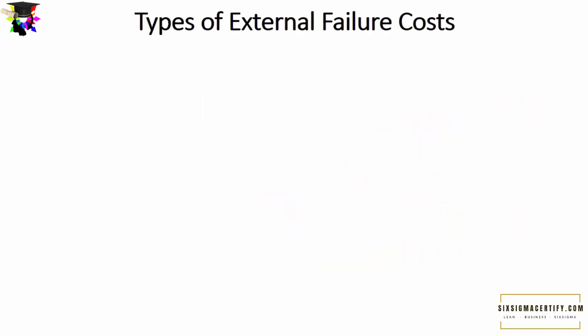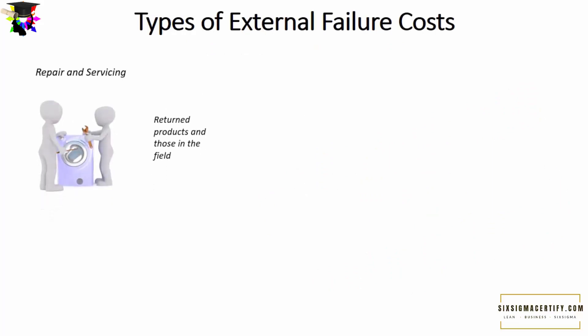The first type of external failure cost is repair and servicing, in which the customer returns the product and you have to either repair or service it. Generally a warranty is given for products, and if a quality issue is reported the product is returned for repair and servicing. Doing so may still affect the reputation of your products or services.